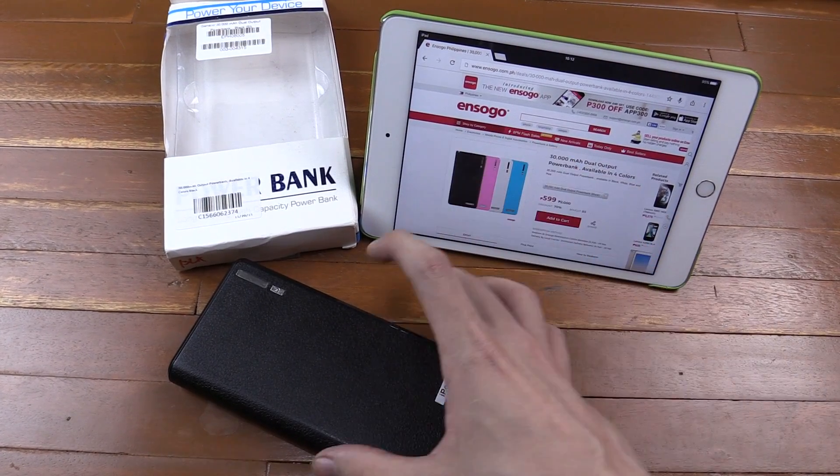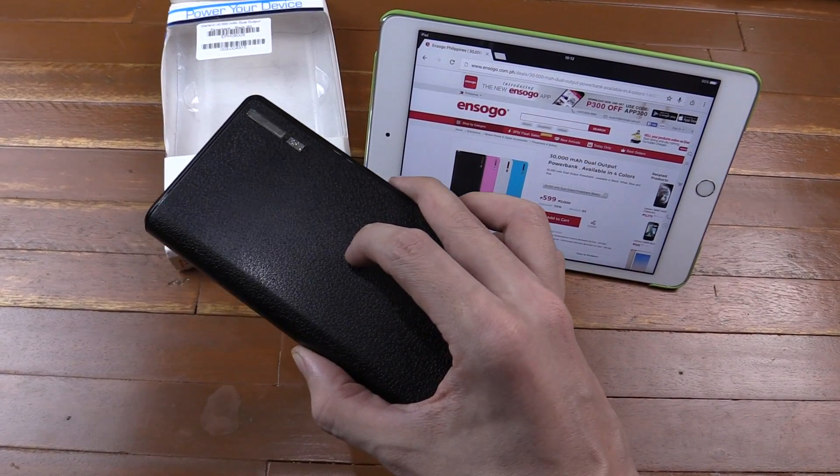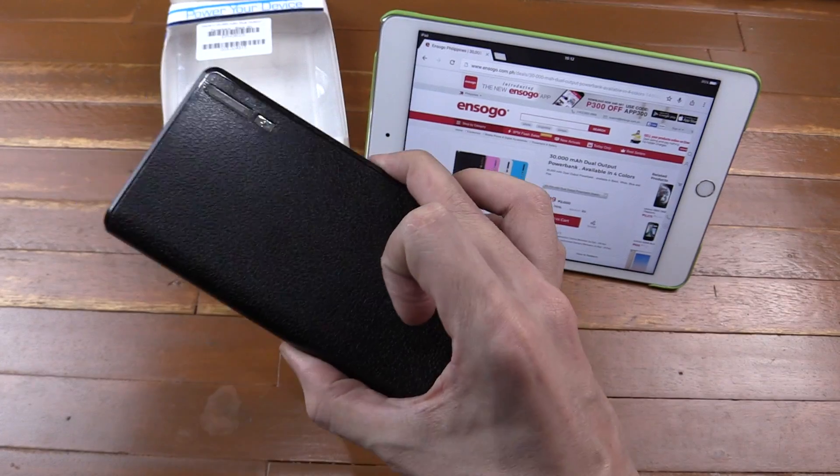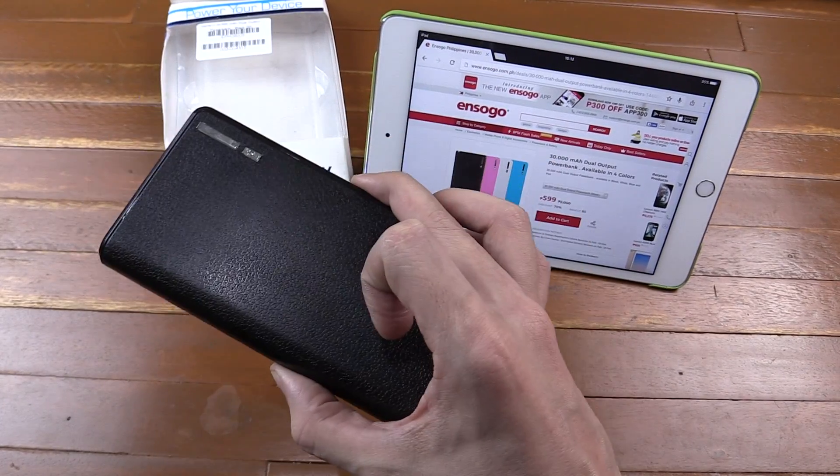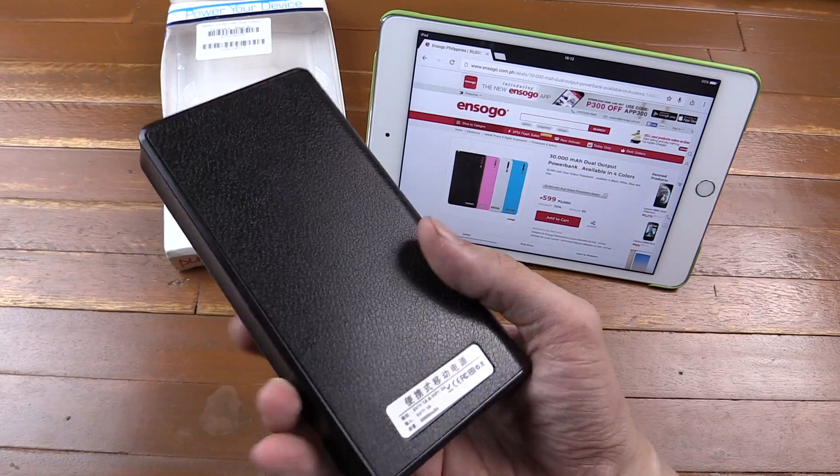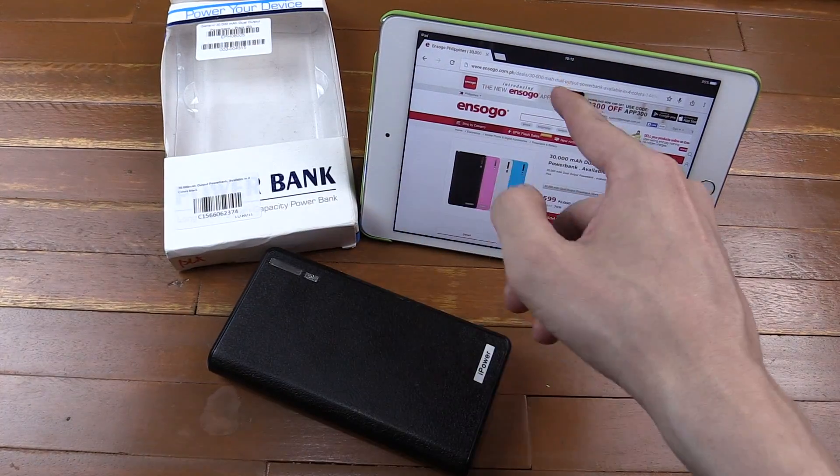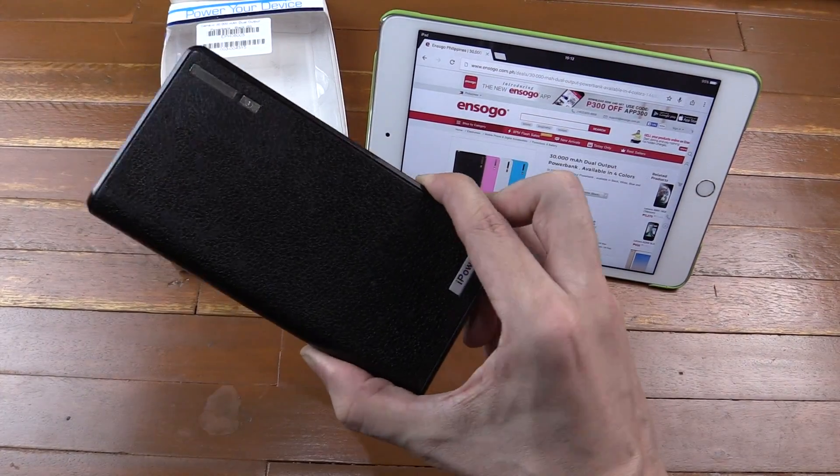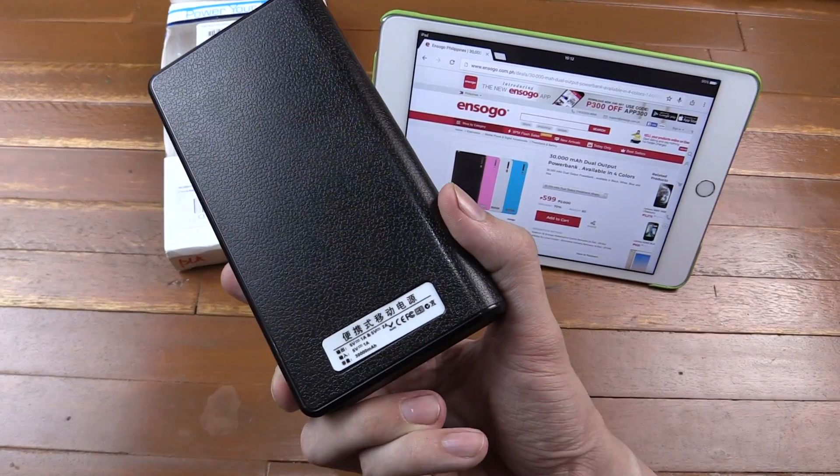Now I have my doubts about this really being a 30,000 mAh battery, mainly because I've seen the exact same battery sold as a 10,000 mAh and as a 20,000 mAh, and now it's being sold as a 30,000 mAh. In fact, even Ensogo themselves have sold this exact same battery with a much smaller rating before.